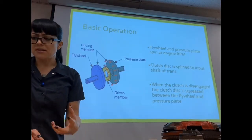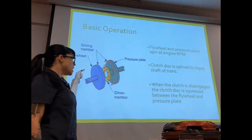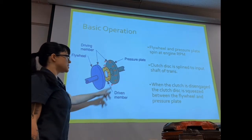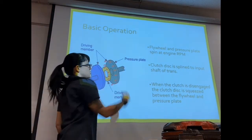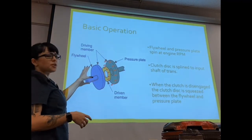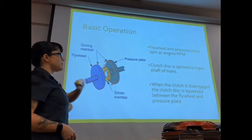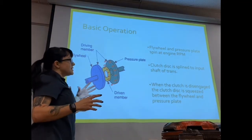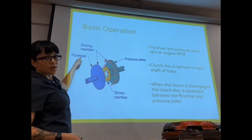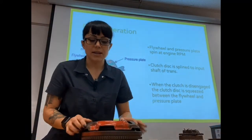As far as basic operation goes, you've got one plate spinning attached to a shaft, and another plate spinning attached to a shaft — driving members and a driven member. One side is going to be your engine, also known as your flywheel. On the back side of your engine is where the clutch assembly mounts.